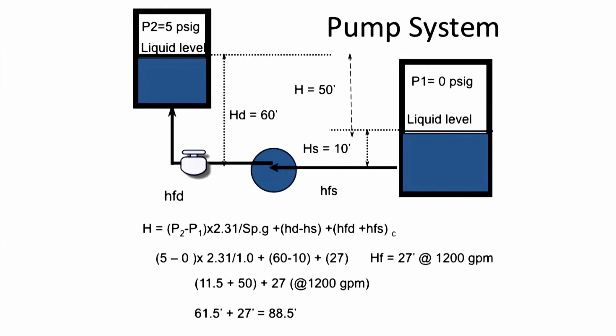Let's look at an actual application. The suction tank on the right-hand side is open to atmosphere, so it's zero PSIG. The discharge tank is at five PSIG. The difference is five PSIG multiplied by 2.31, and in this case we'll assume water with a 1.0 specific gravity, so the pressure head is 11.5 feet. The elevation component is 60 feet minus 10 feet of suction elevation, or 50 feet. Those two added together are 61.5 feet — that's the static head.